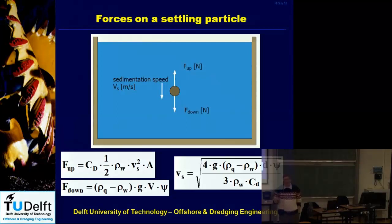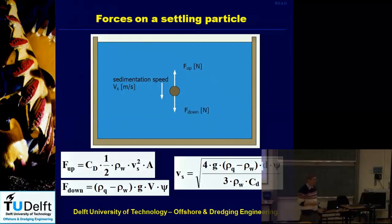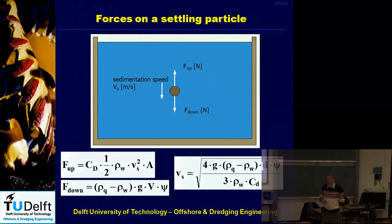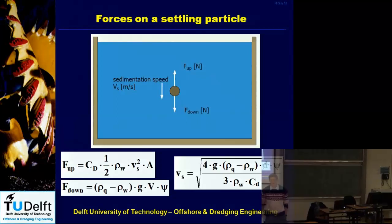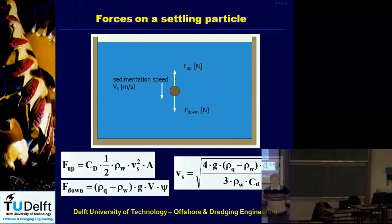Those high velocities will cause erosion and result in the efficiency of the loading process going to zero. At the end you are not loading anything anymore — all the sand that goes into the hopper leaves through the overflow. If you can model the erosion well, you can predict the loading process and determine when to stop loading.